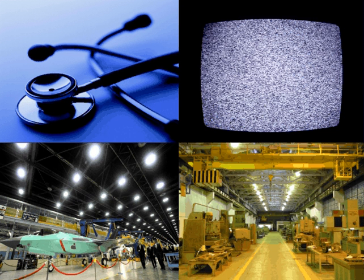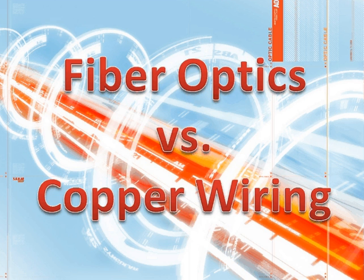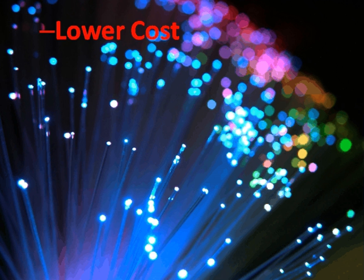Optical fiber is superior to the traditionally used copper wiring in essentially every category. Benefits include lower cost — the same length of optical fiber is made for much lower cost than copper wiring.